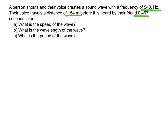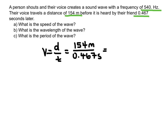Let's start with the first one. To find the speed of the wave, we can use the standard equation for speed: we take how far it traveled — that's distance — and divide by the time. We know that this wave traveled 154 meters and it took 0.467 seconds. Plugging in those numbers, I find that the speed of this wave is 330 meters per second, using SI units of meters per second.